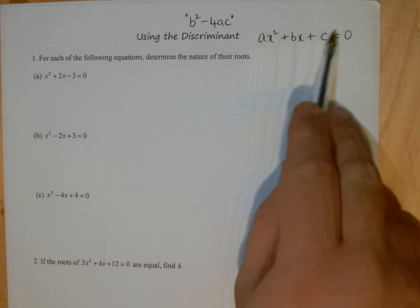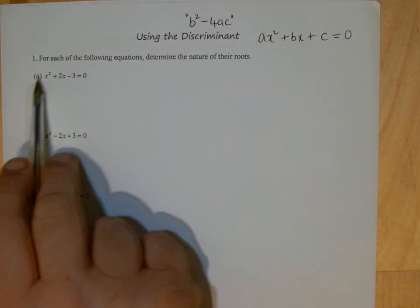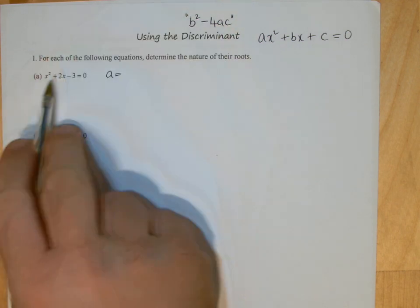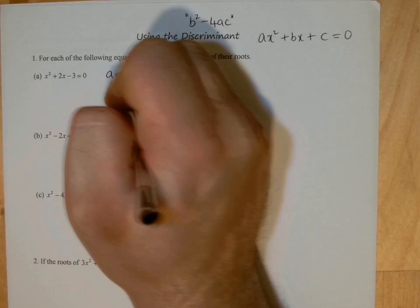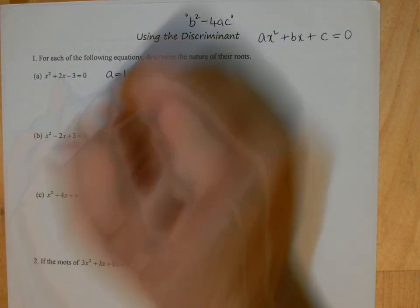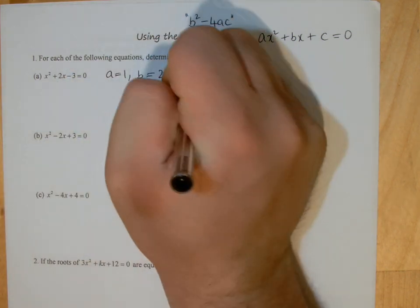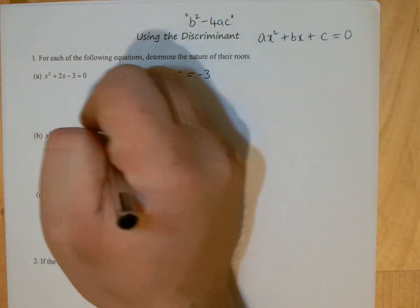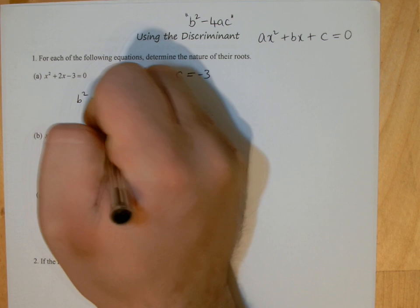So remember now quadratic is in that general format there. When I look at what I've got here, a will be the value in front of the x squared, which is just one, b will be the value in front of the x, which is positive two, and c will be the value in the constant at the end there, which is negative three.